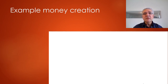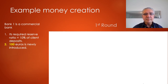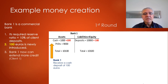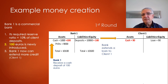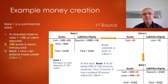Let's start with an example of money creation. This is the first round. We have bank one, a commercial bank, with a required reserve ratio of ten percent of client deposits. That means its amount of cash as an asset must be ten percent of the size of client deposits. Imagine a new deposit of 100 euros comes to the bank. Bank one can now extend more credit to client one — it will lend only 90 euros, keeping 10 euros as cash reserves.